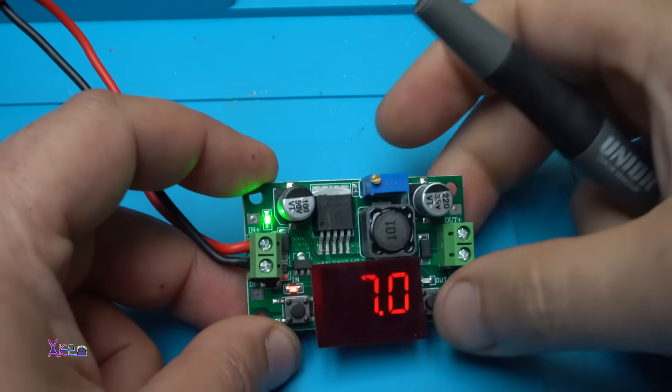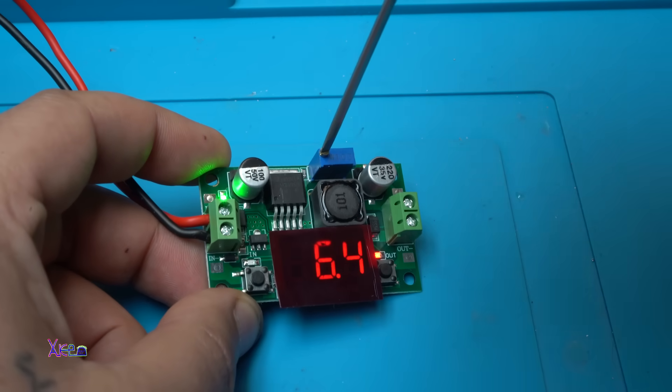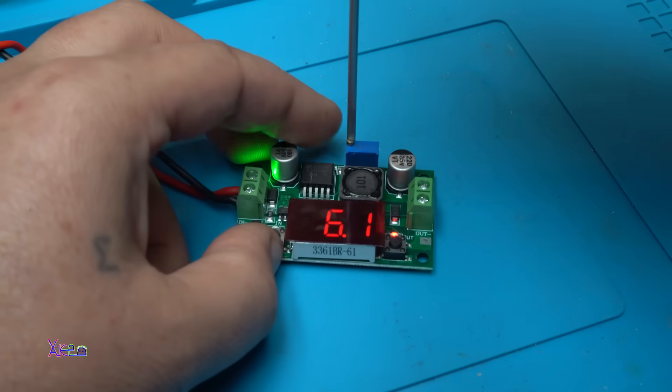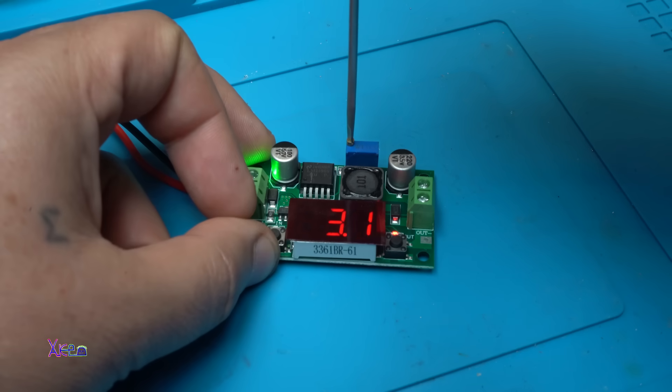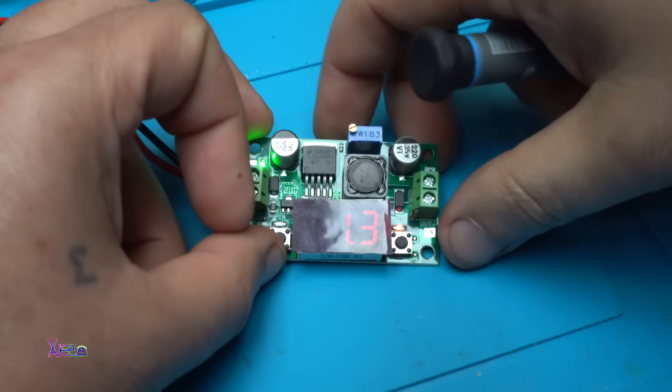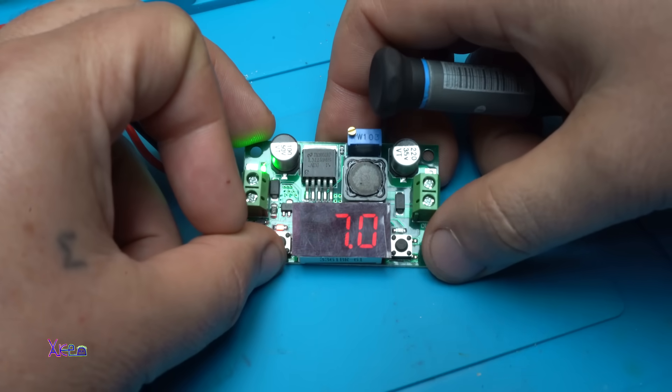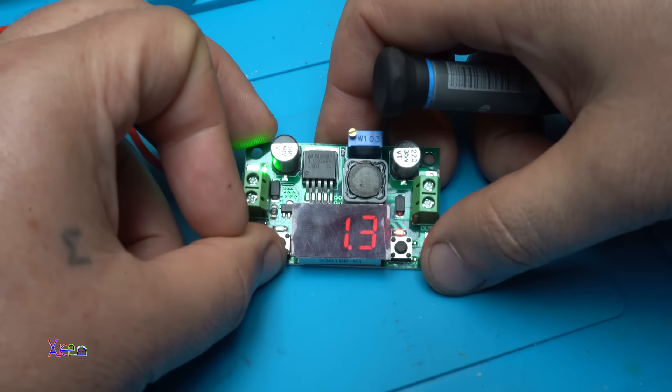Now I can adjust the voltage. Let's go to 1.3 volts. This is output. When you press it, you can see the input voltage: 7 volts. The output voltage: 1.3 volts. Beautiful.